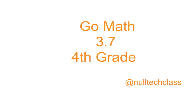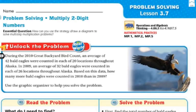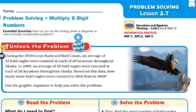Good morning. Today's lesson is 3.7: Problem Solving — Multiply Two-Digit Numbers. Our essential question: how can you use the strategy 'draw a diagram' to solve multi-step multiplication problems?